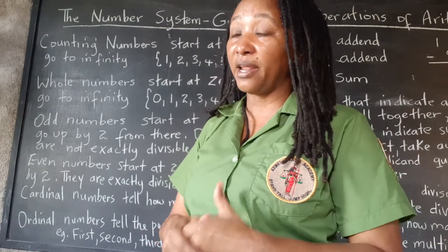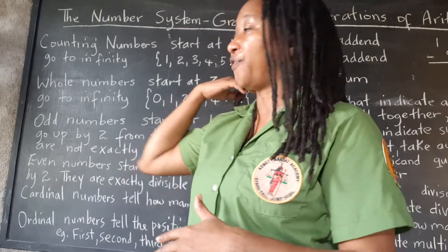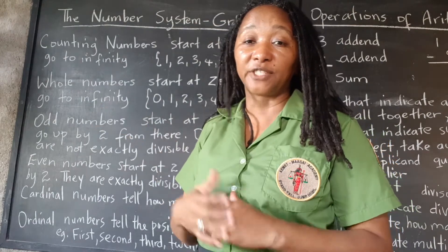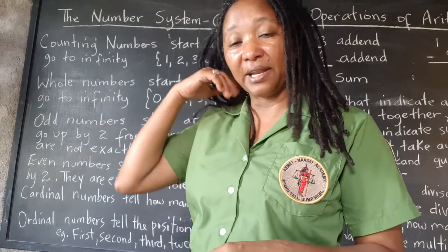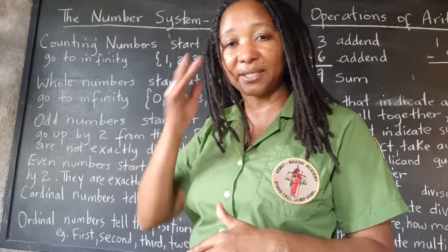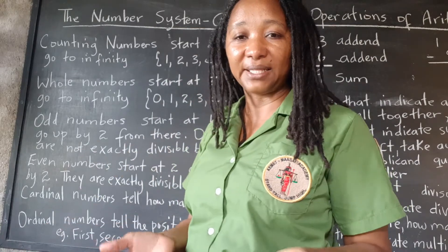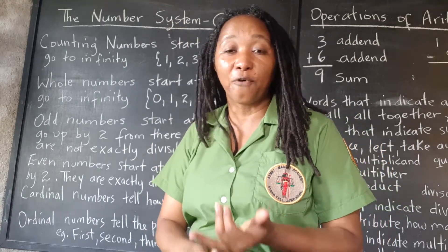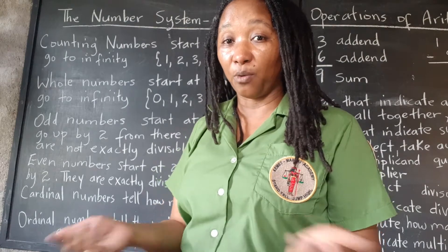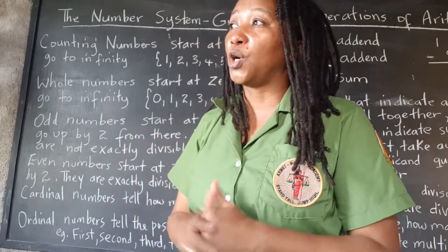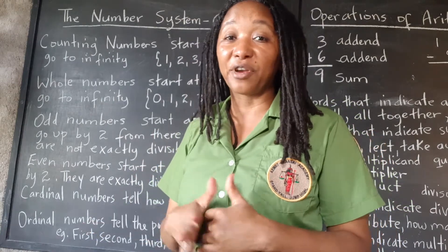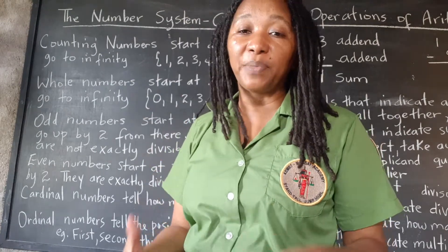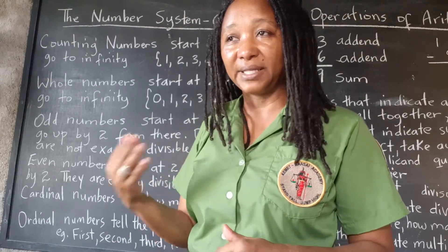For example, if I have 403, the zero there in the middle is holding the place of the tens, because there are no tens in that number. There are 400s and three ones, but if we only wrote four and three, that would be 43, which would be incorrect. So zero in mathematics has very great importance as a placeholder to keep the value of numbers when there is a place missing.